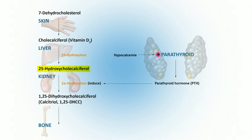Then in the kidney, 25-OH vitamin D is further hydroxylated to 1,25-dihydroxyvitamin D — sometimes referred to as 1,25-OH vitamin D or calcitriol. This is the physiologically active form of vitamin D.